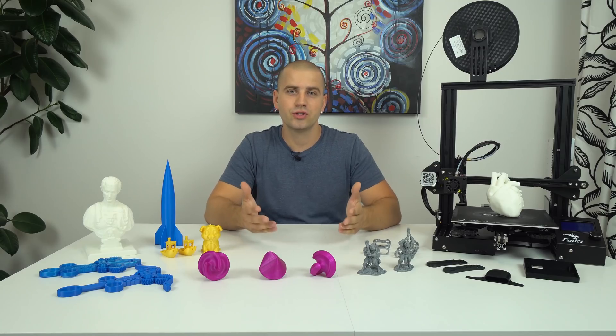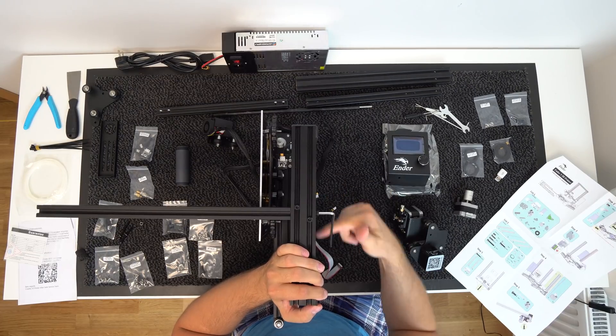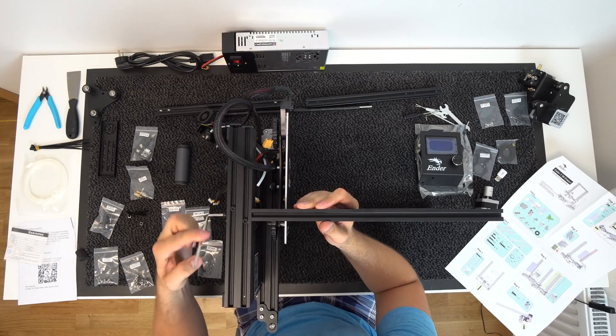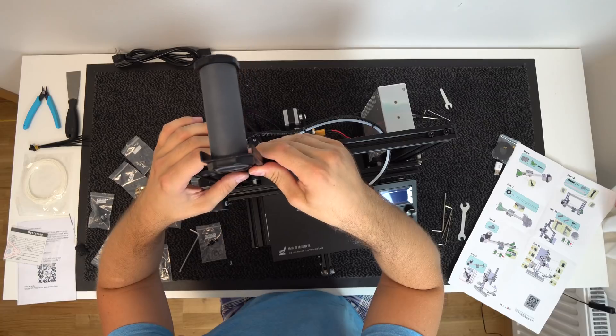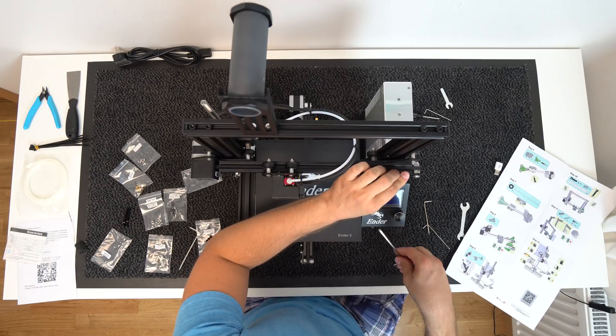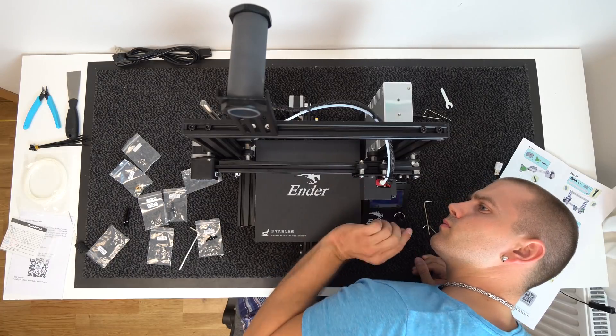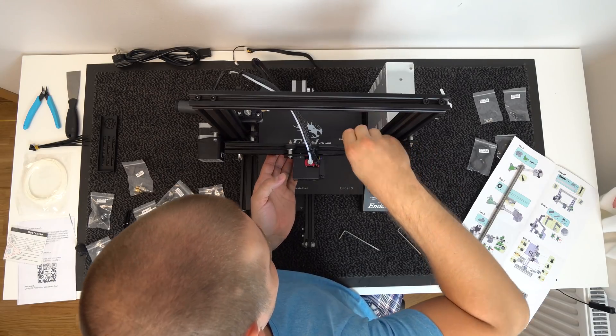Unlike CR10, which comes around 80% pre-assembled, the Ender 3 comes as a kit, around 50% pre-installed, so you need a little more time to put it together, which is totally fine as you will save a lot compared to a ready-to-go machine. I assembled mine in around 45 minutes as I like to work slow and pay attention to all the details without a rush. Instructions were great and very easy to follow.